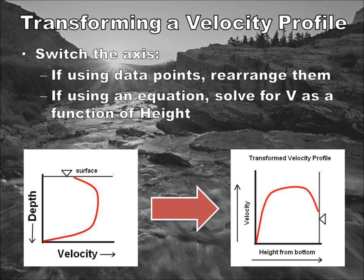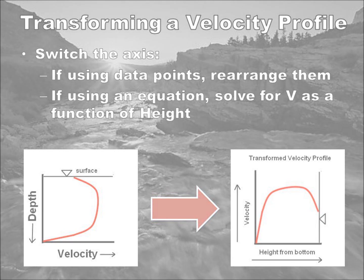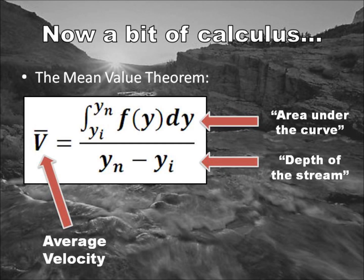Transforming the velocity profile into something we can use like a function is simple. If we are using data points, simply switch the data so that the depth is on the x-axis and the velocity is on the y-axis. If we're using a best-fit function, we can solve for v as a function of depth. To change depth to height from the bottom, subtract the total depth from the depth at any given point and take the absolute value. The mean value theorem is a way of using calculus to find the average of a complex function — in our case, the average velocity. To use it, find the area under the transformed curve, then divide this value by the depth of the stream.